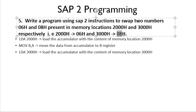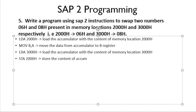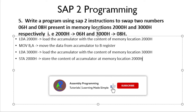Now we need to swap the contents between addresses 2000H and 3000H. We have loaded the value from 3000H into the accumulator, so if we store the content of the accumulator into 2000H the content will be swapped. To store in SAP 2 we use the STA instruction: STA 2000H, which stores the content of the accumulator at memory location 2000H. By this instruction we will have 08H in address 2000H.